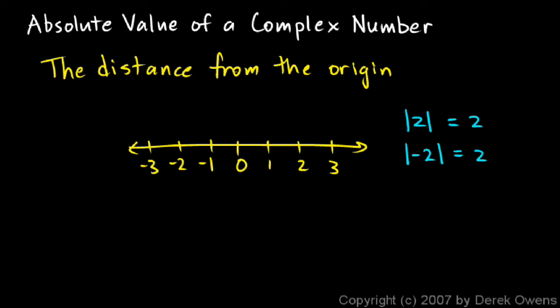The absolute value of a complex number will be the distance that number is from the origin. But in this case we're talking about the distance from the origin in the complex plane. So let's look at an example.